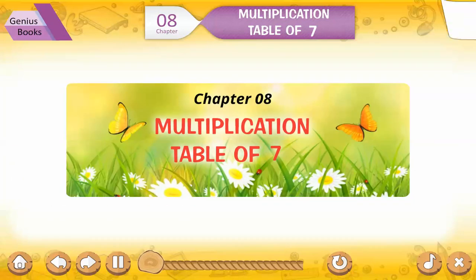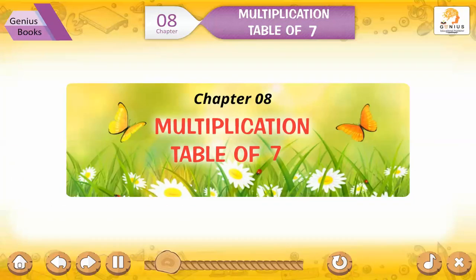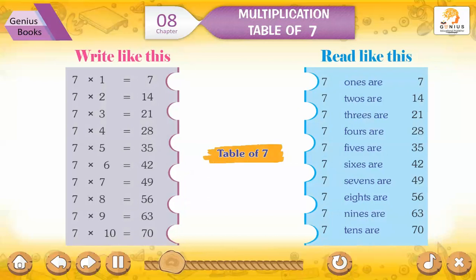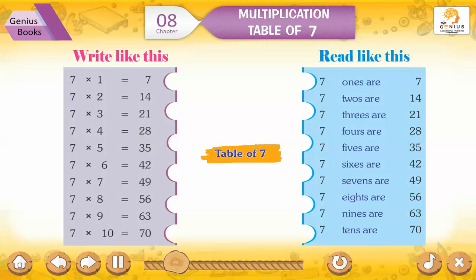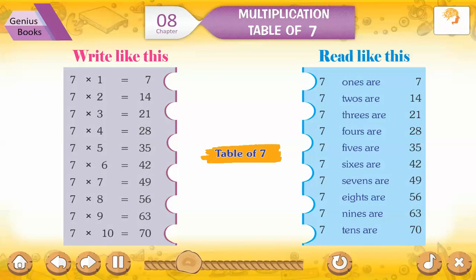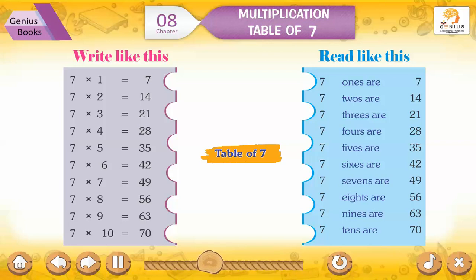Chapter 8: Multiplication Table of 7. Table of 7 — write like this, read like this. 7 ones are 7.